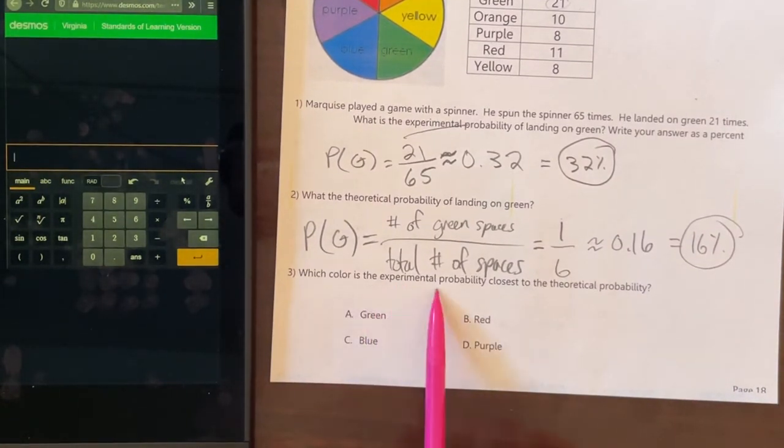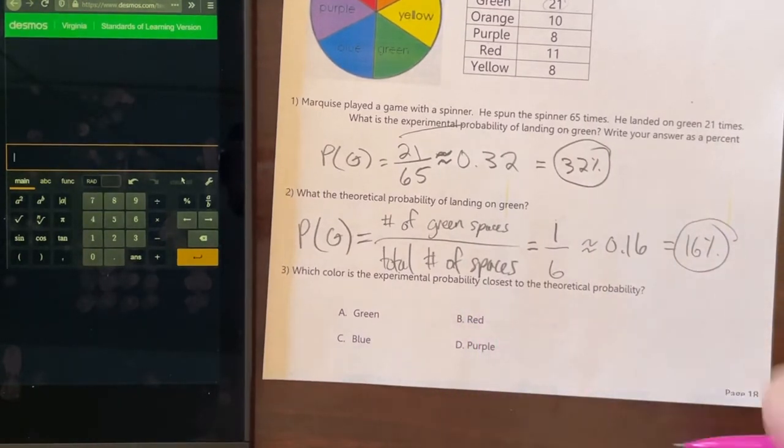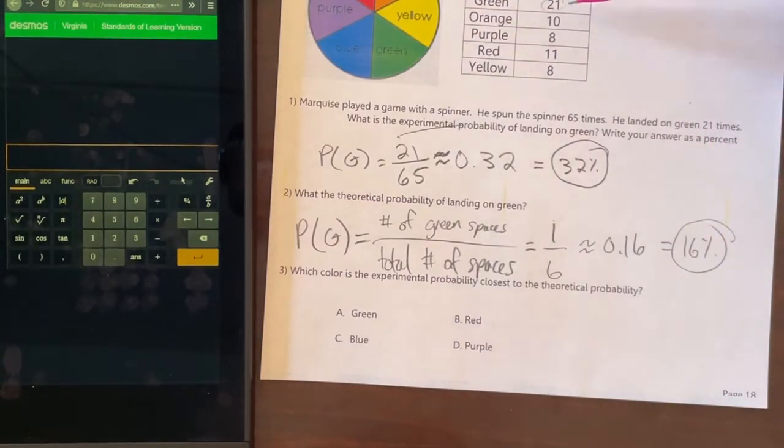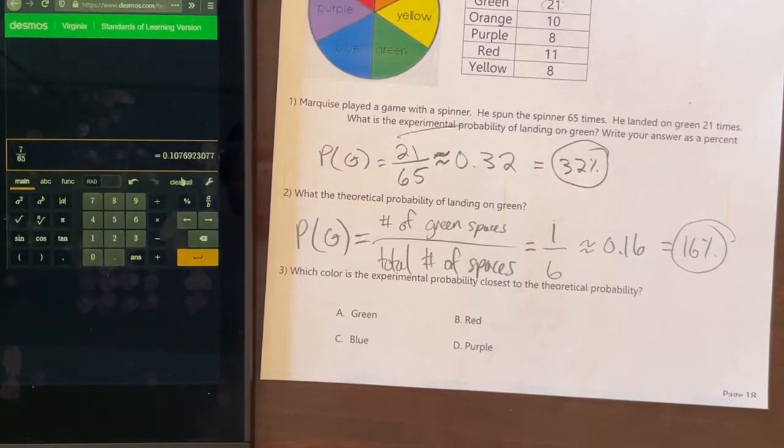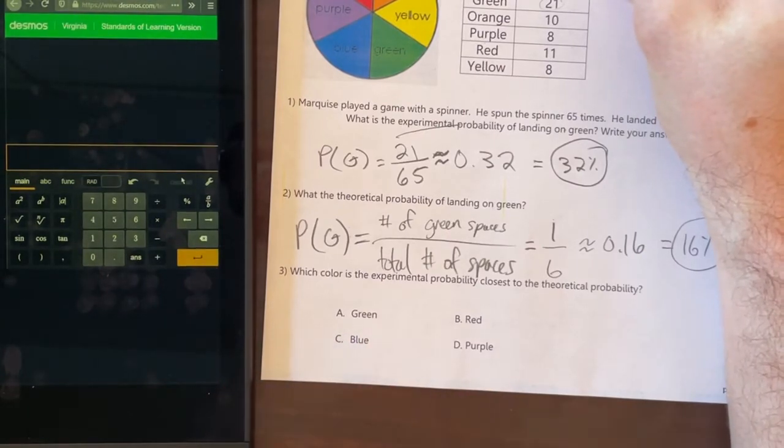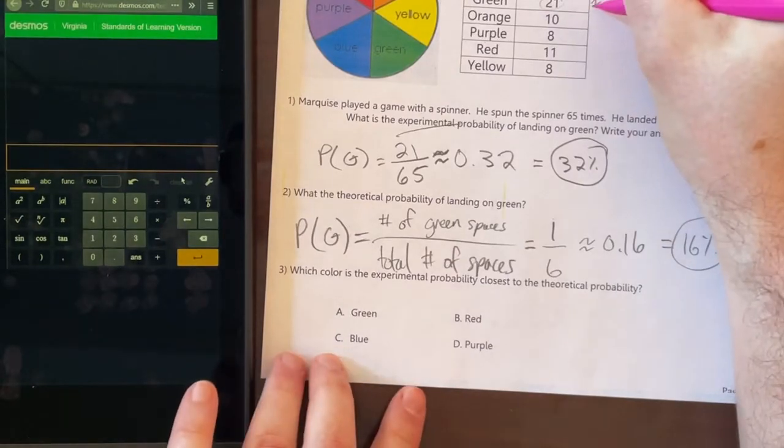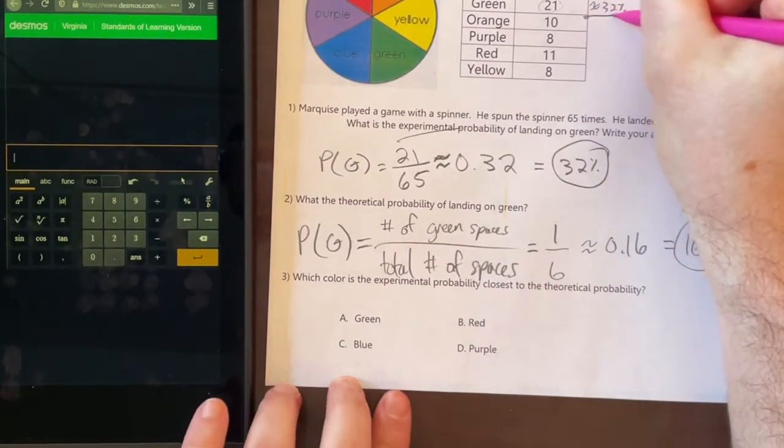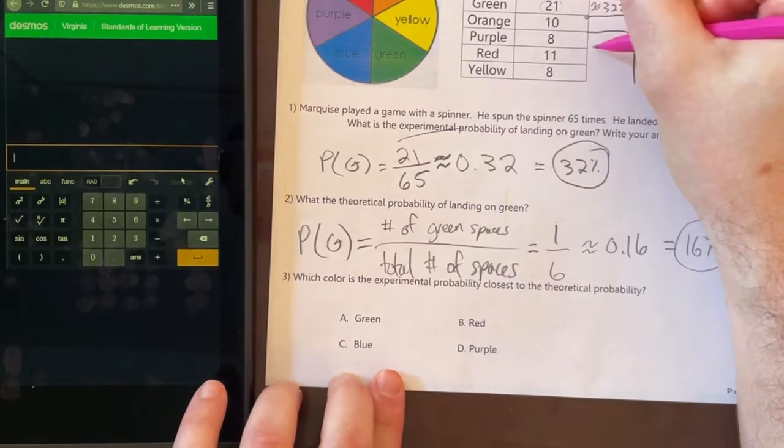For number three, which color is the experimental probability closest to the theoretical probability? For each of these, since there's six different colors, they're each going to be about 16%. So which of these is closest to 16%? I have 7 over 65. That's about 10%, or we'll do about 11%. 21 was about 32%. Let's have it split like so. What is 10 over 65? That's pretty close. That's about 15%.